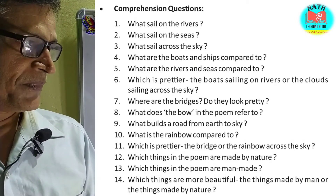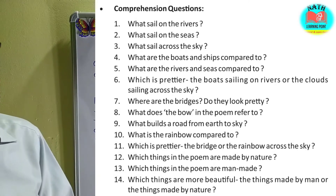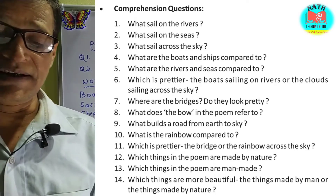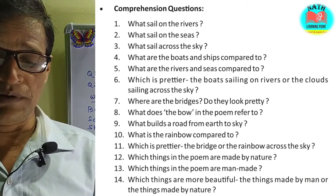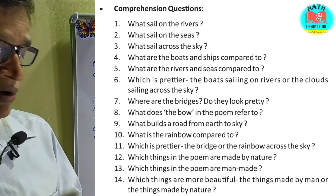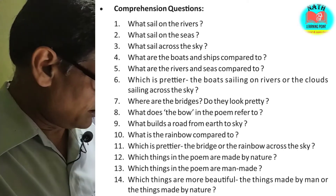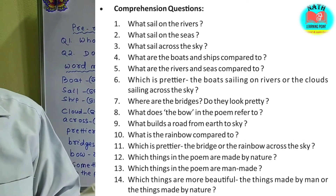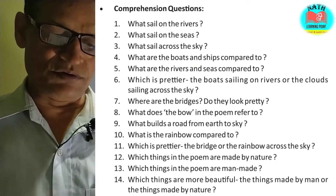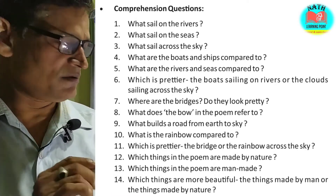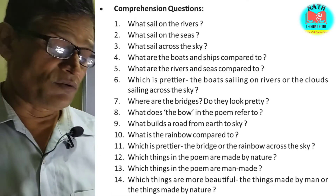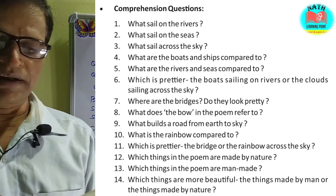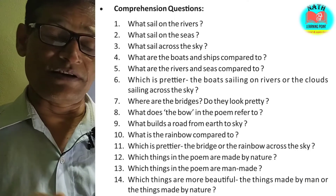Question number 9: What builds a road from earth to sky? The bow that bridges heaven over the tops of the trees builds a road from earth to sky. Question number 10: What is the rainbow compared to? The rainbow is compared to the bridges across the rivers. Question number 11: Which is prettier, the bridge or the rainbow across the sky? The rainbow across the sky is prettier than the bridge.